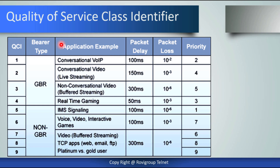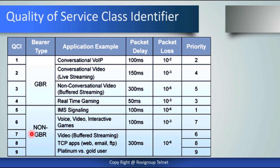Quality of Service Class Identifiers: we have QCI values from 1 to 9. The bearer type can be either GBR or non-GBR. GBR stands for Guaranteed Bit Rate, meaning the bit rate will be guaranteed for that service and resources will be reserved for it. Non-GBR means resources are provided when available for that specific type of service; otherwise, they are shared between users.